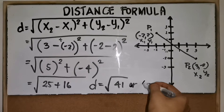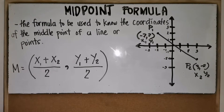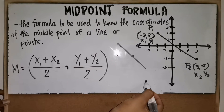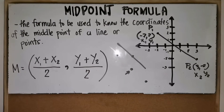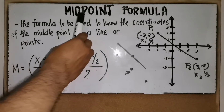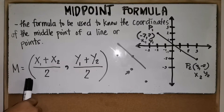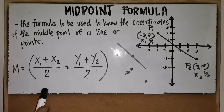You can also have the answer in decimal form, which is 6.40 units. Next, let's talk about the midpoint formula. It is the formula used to find the coordinates of the middle point of a line or between two points. The midpoint is denoted with uppercase letter M: M is equal to open parenthesis, x sub one plus x sub two all over 2, comma, y sub one plus y sub two all over 2. Solving the first fraction gives you the x coordinate, and the second gives the y coordinate of your midpoint.